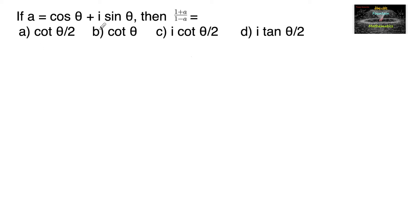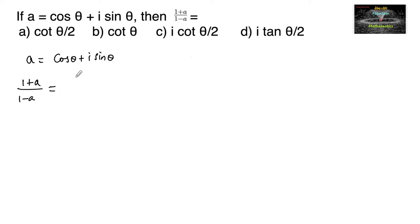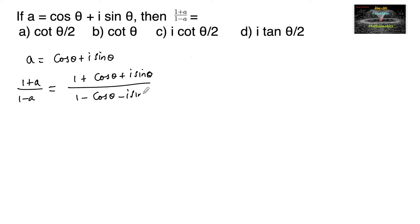If a is equal to cos θ plus i sin θ, then (1 + a) / (1 − a) is equal to (1 + cos θ + i sin θ) / (1 − cos θ − i sin θ).